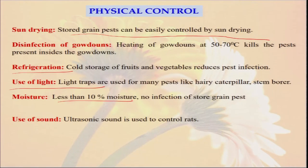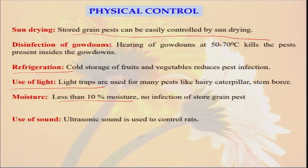Similarly, whenever we store any seed grain that we have to use for the next year, moisture content should be very less. If we could not dry properly and we keep it in our gunny bag, then the chances of insect infestation, especially for stored grain pests, will be high. So always we have to dry carefully and reduce the moisture content — maybe below 8 or 10 percent.